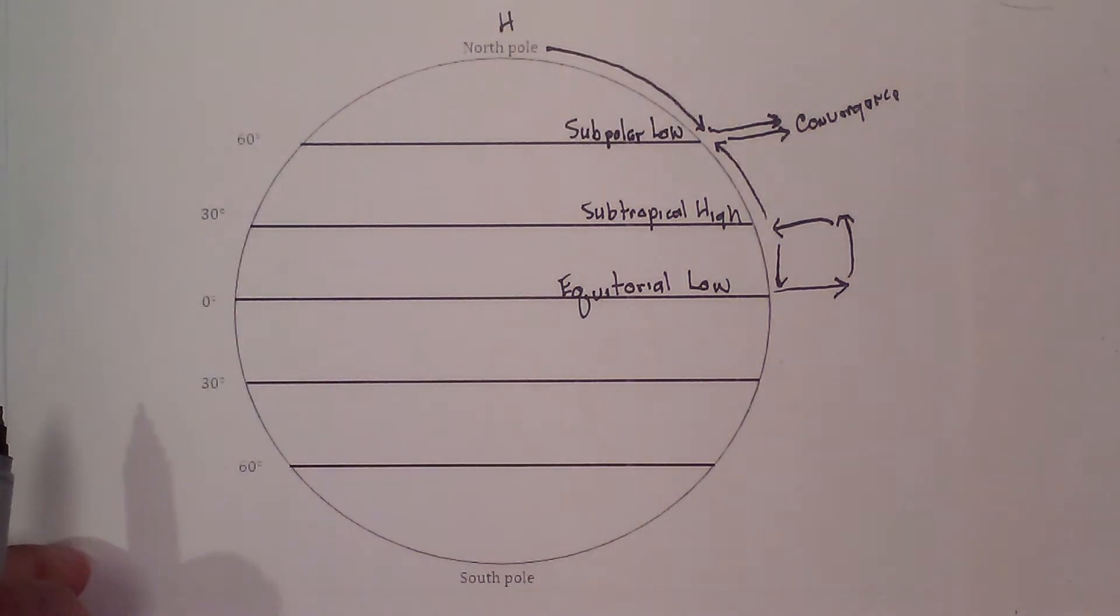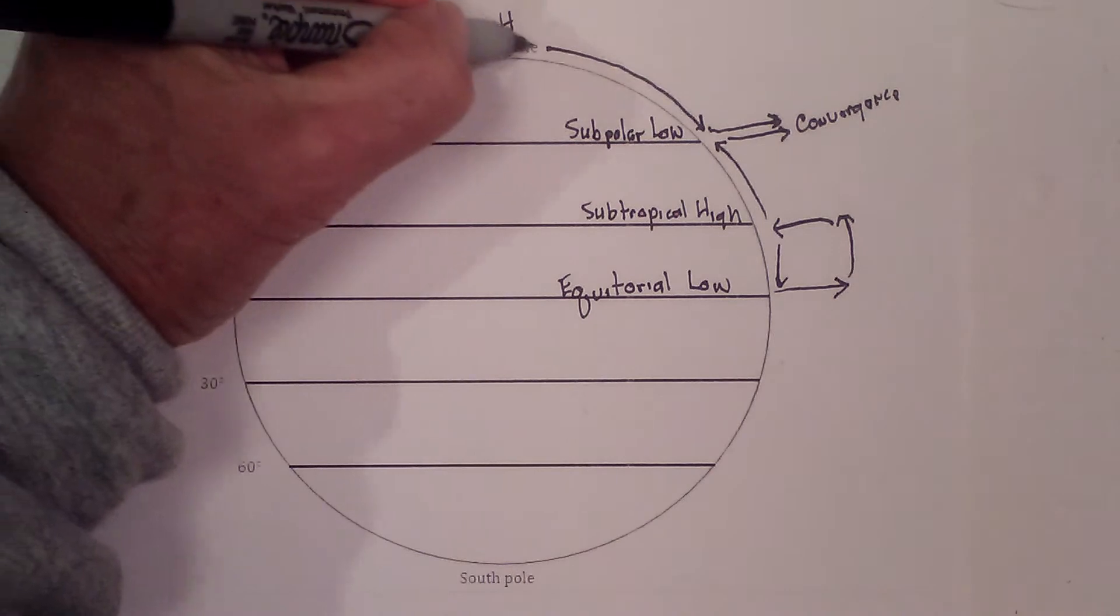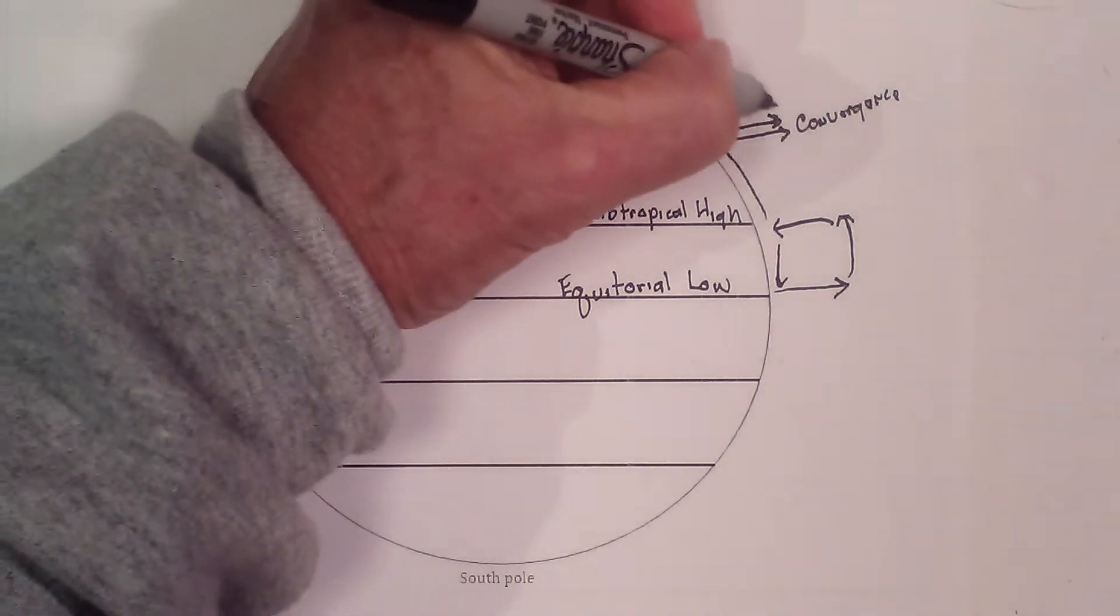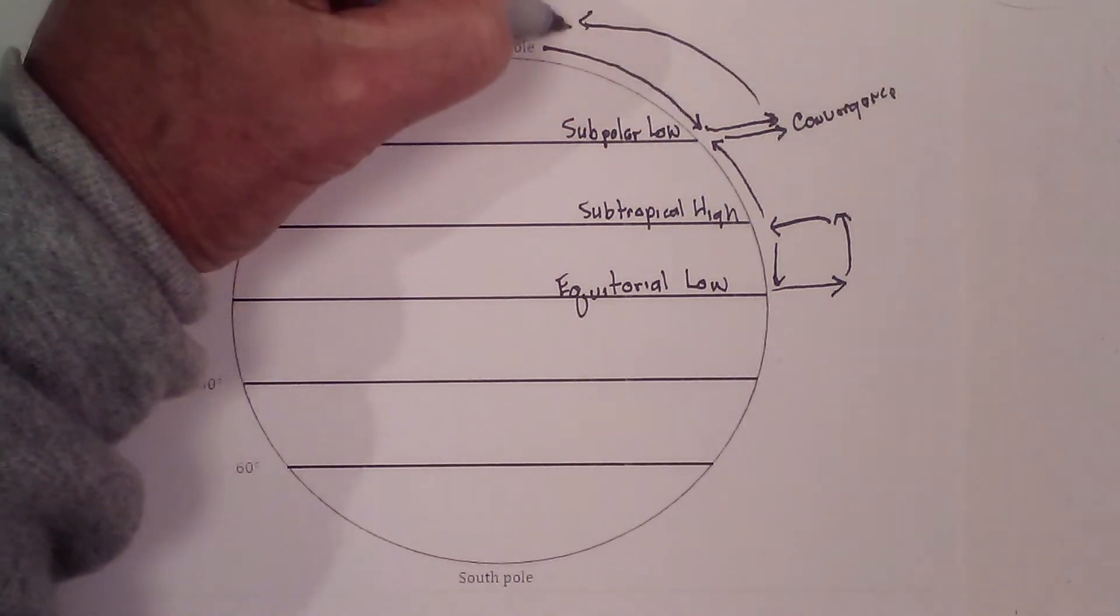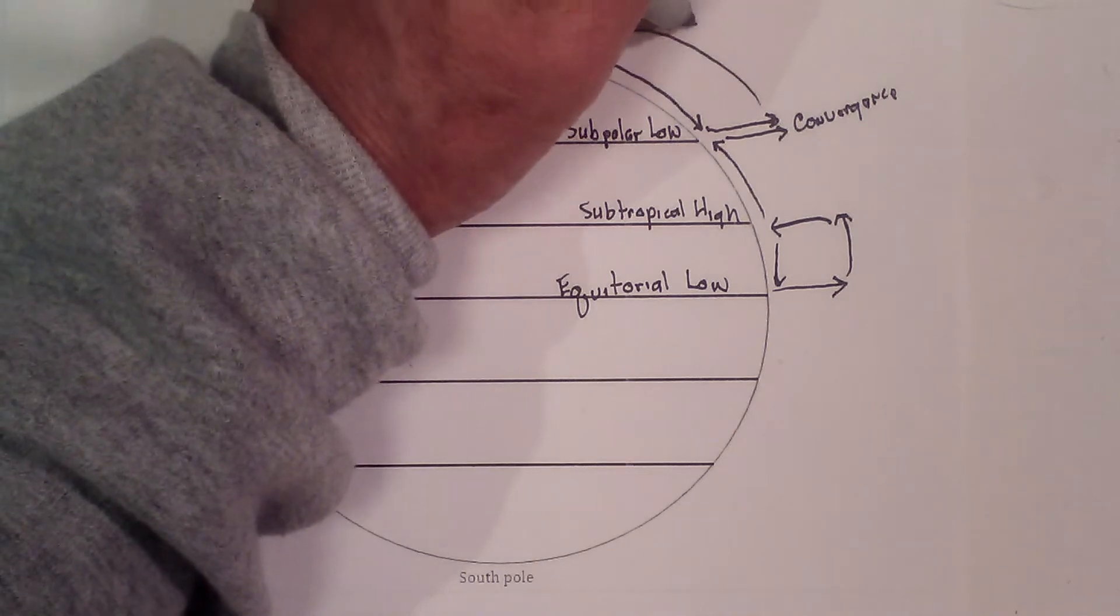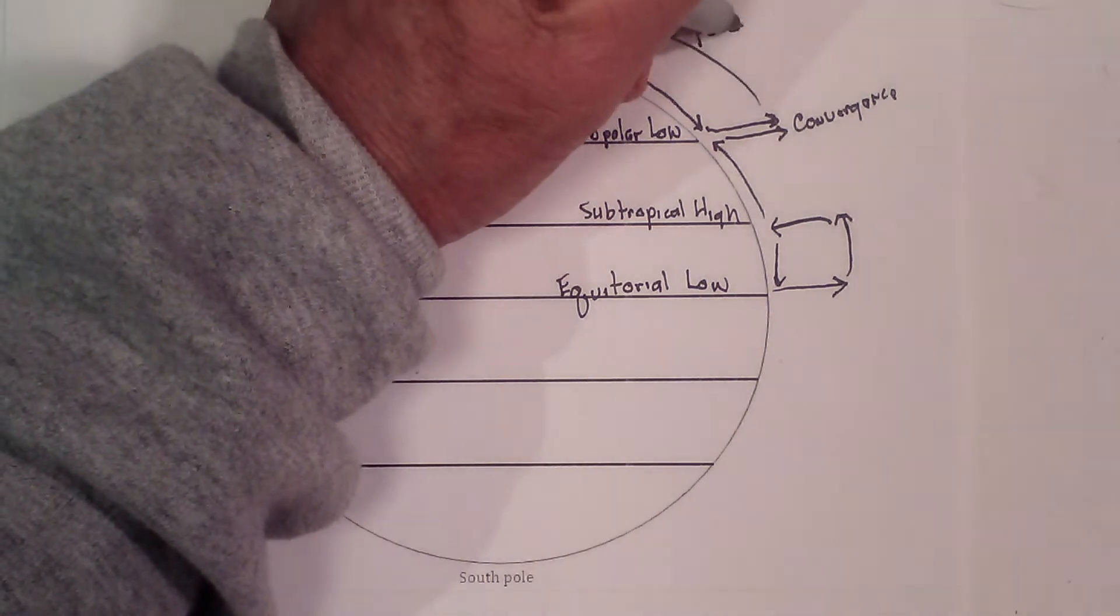Now let's get back to this. It flows down, begins to rise, spreads back out, and makes a little cell. It sinks back down. This is called the polar cell.